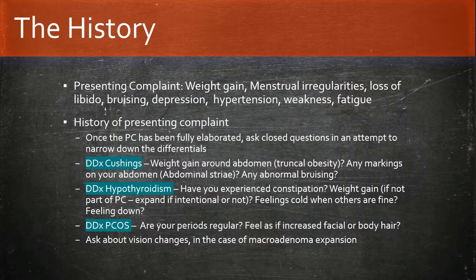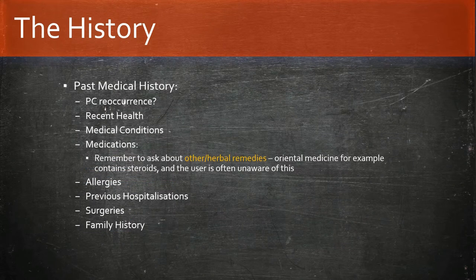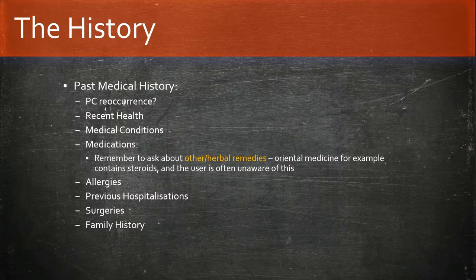If the patient experiences any vision changes, this may be due to a macroadenoma having put pressure on the optic chiasm. In past medical history, ask about recent health, medical conditions, and medications — specifically prescribed and over-the-counter medications, and any steroids. Check compliance with medications to assess correct dosing. Always ask about herbal remedies, as oriental medicine for example may contain steroids that the patient may be taking without their knowledge. Ask about allergies, previous hospitalizations, surgeries, and family history.